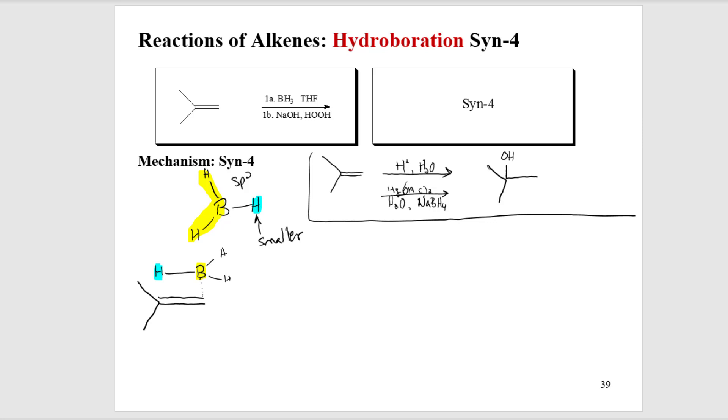So the way that I'd like to orient this BH3 molecule to deliver a boron and a hydrogen across my system is I'm going to put the boron over here and the little hydrogen over on the left. So as the syn-4 ensues, the pi bond makes a new carbon boron bond. The boron releases its bond to form the new carbon hydrogen bond. This is my syn-4. The hydrogen and the BH2.